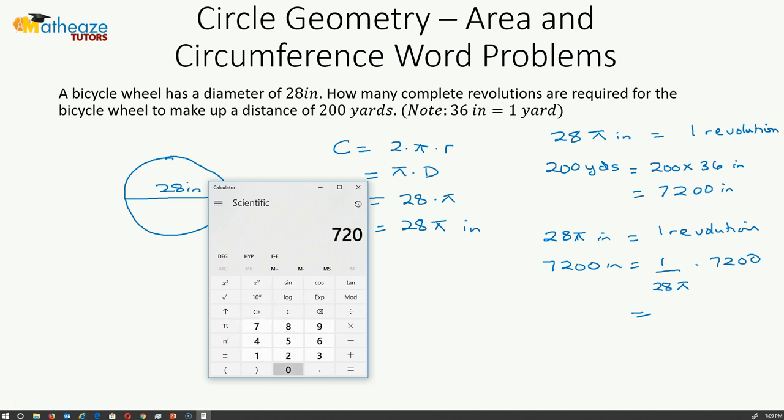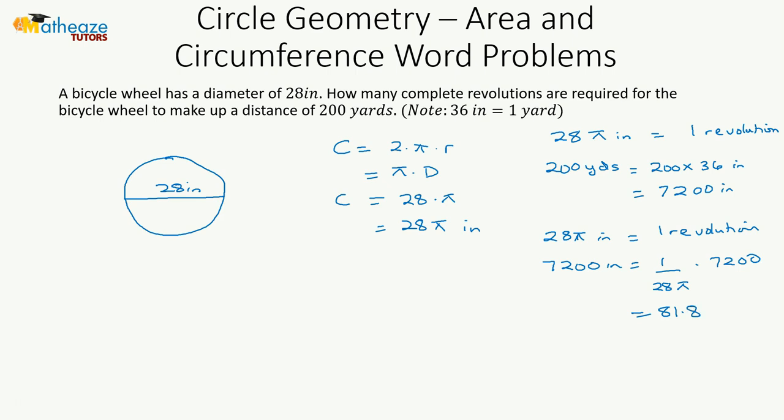We have 7,200 divided by 28 times pi, which is equal to 81.8 revolutions. And so to complete 200 yards we need to make sure we have 82 revolutions.